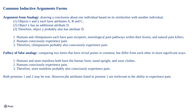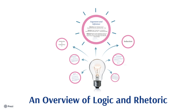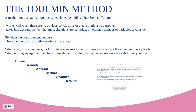The last thing to consider in this module is a method for analyzing arguments from the philosopher Stephen Toulmin. The Toulmin model is helpful when there are no obvious conclusions or clear solutions to a problem — it takes into account that most situations are complex involving a number of variables. In his book The Uses of Argument, he presents six elements for argument analysis that can help you as both a reader and a writer. When analyzing arguments, look for these elements to help you see and evaluate the argument more clearly. When writing an argument, include these elements purposefully so that your audience may see the validity of your claims. These six elements are: claims, grounds, warrant, backing, qualifier, and rebuttal.